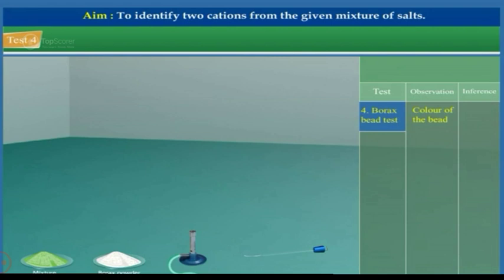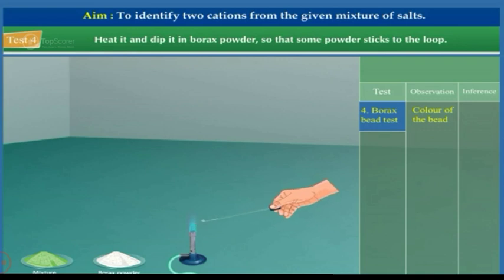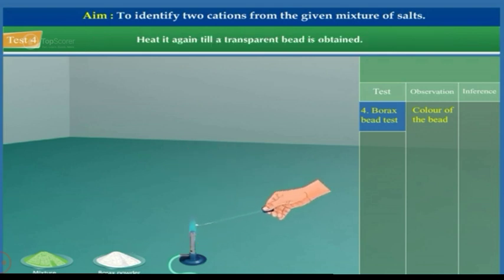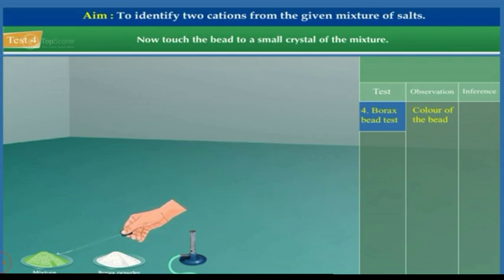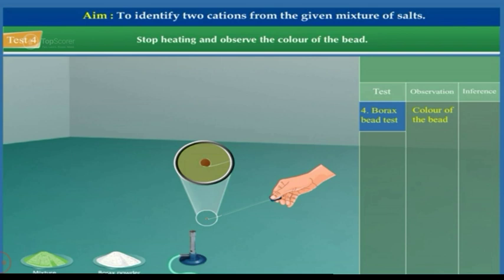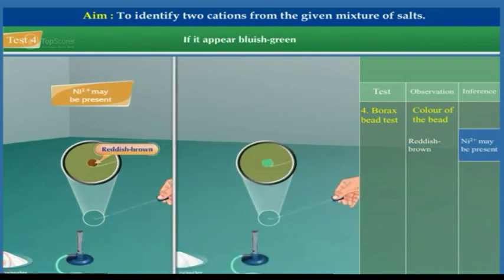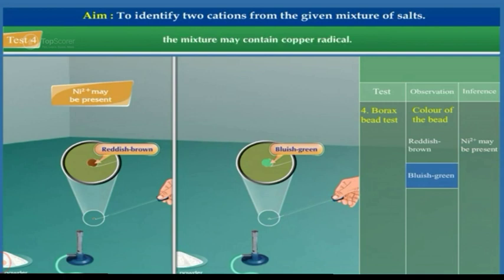Test 4: Borax bead test. This test is performed if the mixture is colored. Make a small loop at the end of a clean platinum wire. Heat it and dip it in borax powder so that some powder sticks to the loop. Heat it again till a transparent bead is obtained. Touch the bead to a small crystal of the mixture and heat it again in an oxidizing flame. Stop heating and observe the color of the bead. If it appears reddish-brown, nickel radical may be present. If it appears bluish-green, copper radical may be present.